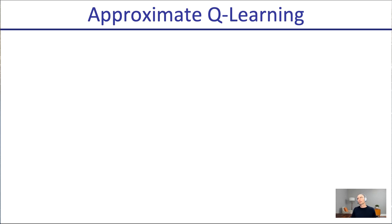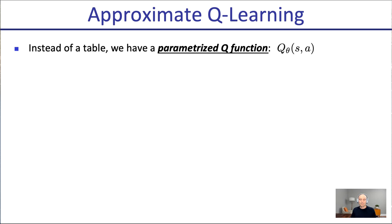In approximate Q-learning, instead of a table we have a parameterized Q-function. Q is a function that takes in state S and action A and outputs the Q-value for that state and action. We don't hard-code the function — we want it to learn the right function via a parameter vector theta. By changing theta it represents a different Q-function with different values for different states and actions. This could be a linear function in features — traditionally popular — or these days typically a neural network.